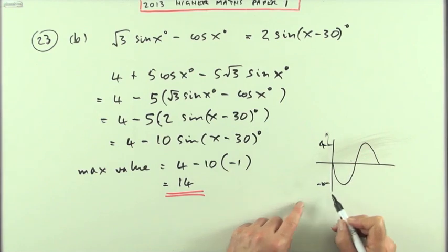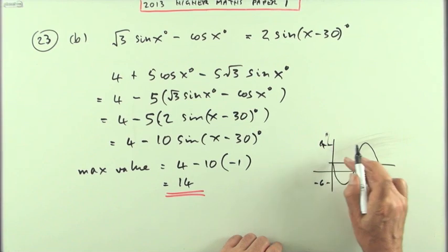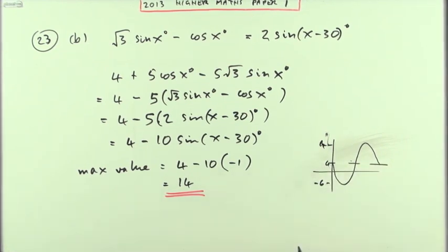But the whole thing's getting shifted up 4, so you just move that all up 4. So the top moves up to 14 and the negative 10 moves up to negative 6. And of course that axis would be down there somewhere, because it's all been shifted up to 4. Either way around, maximum 14.